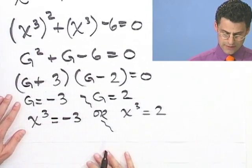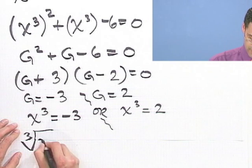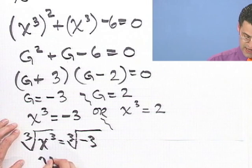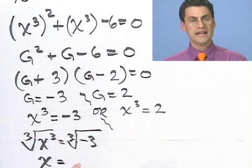The cube root of this side is cube root x cubed equals the cube root of minus 3. I see x equals. Now you might say, oh, you can't take the cube root of a negative. You sure can.